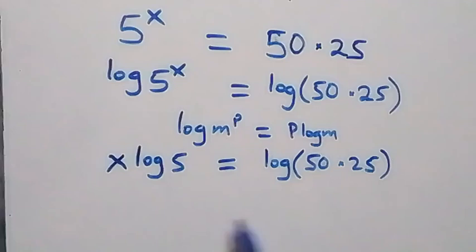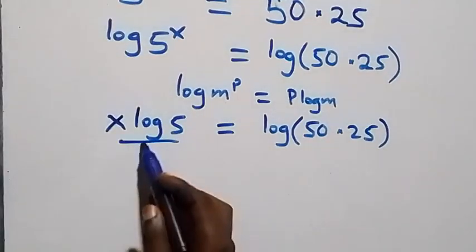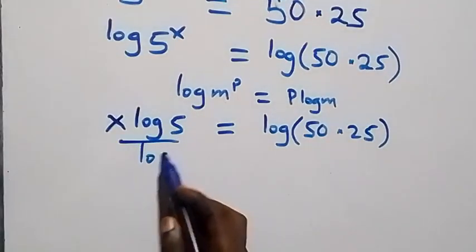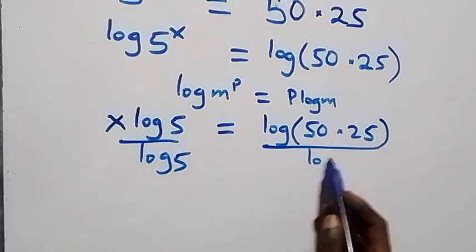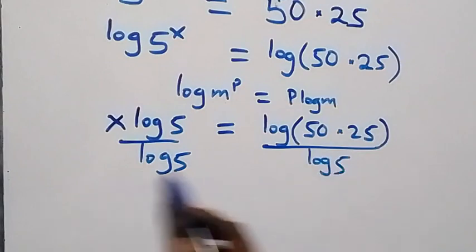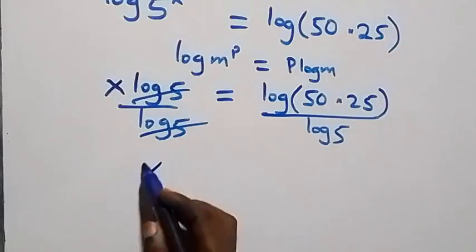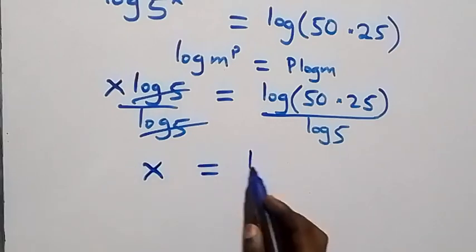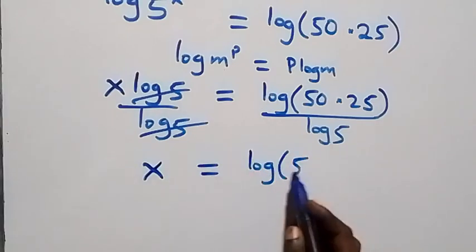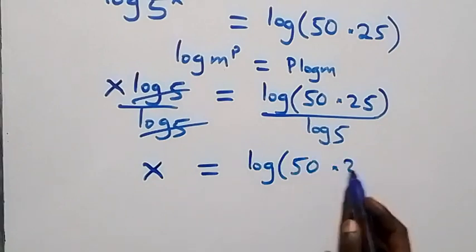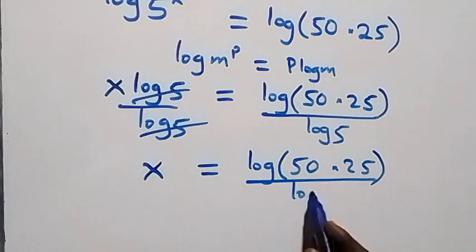Then from here, we divide both sides by log 5. Log 5 cancels each other, then we have x equals to log of 50 times 25 over log 5.